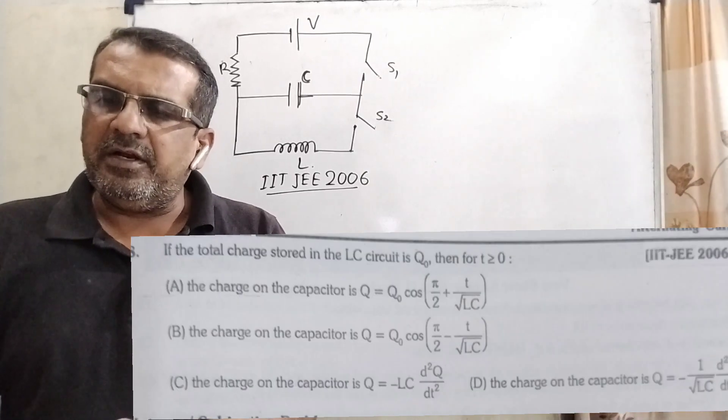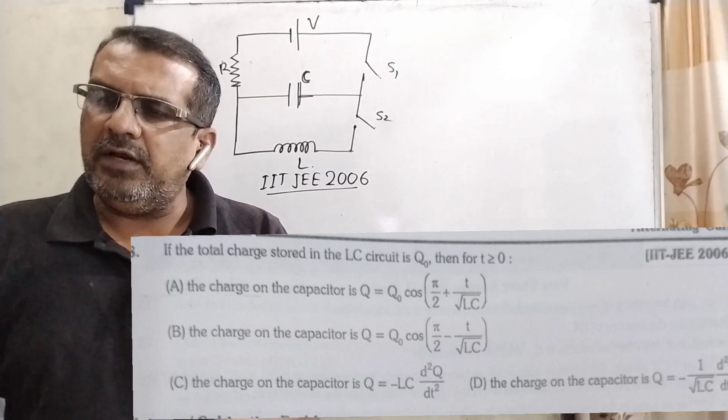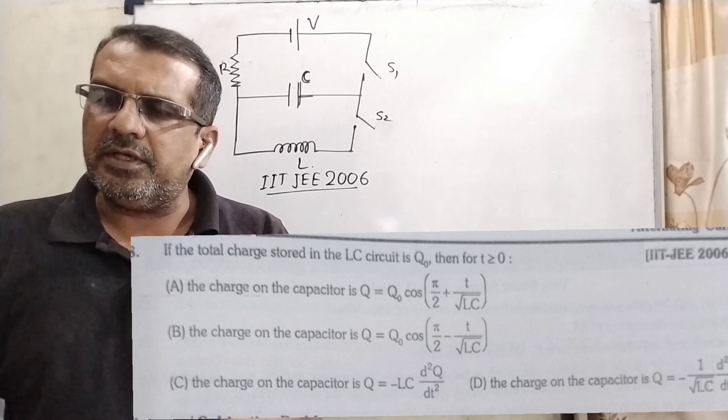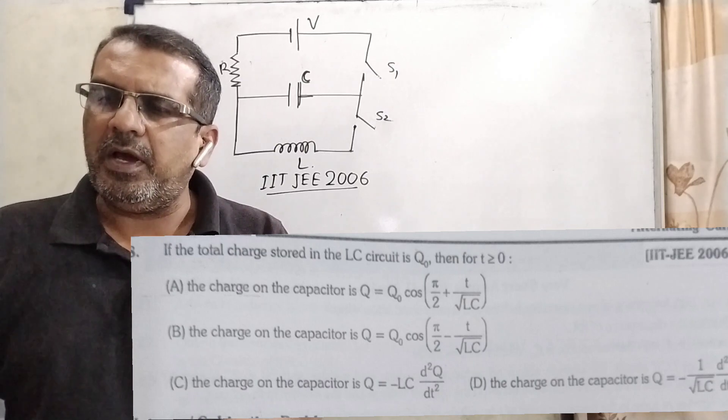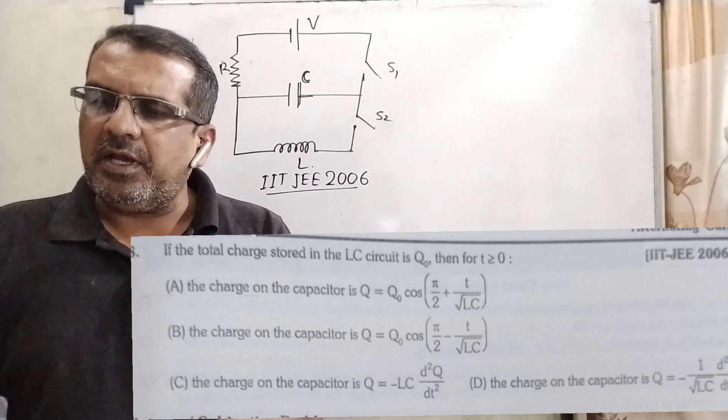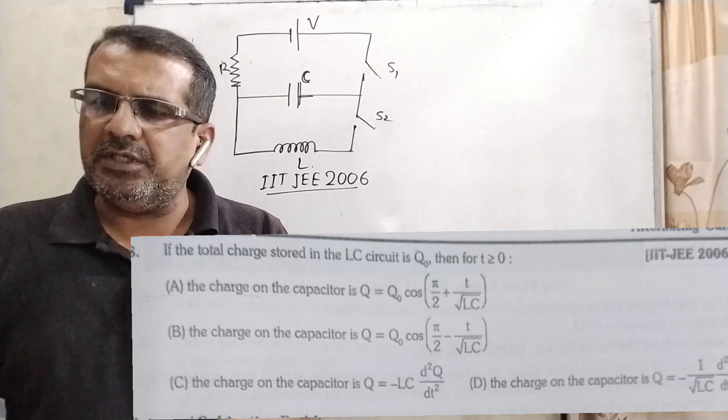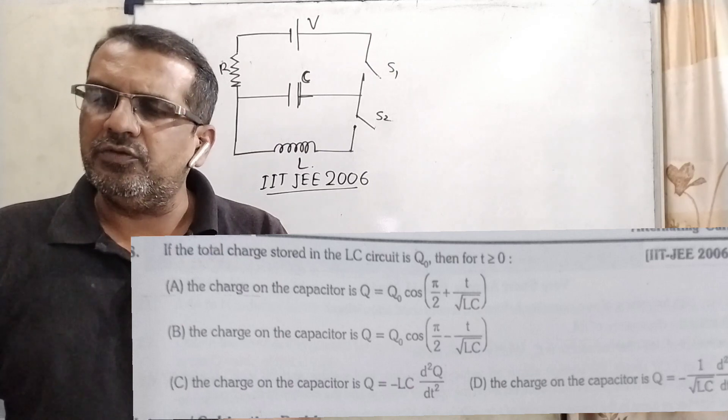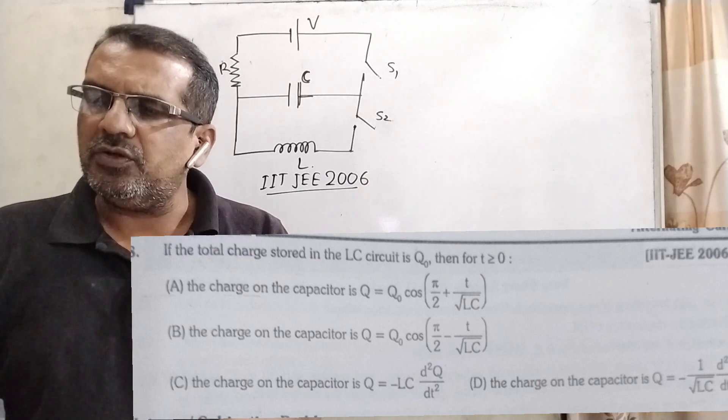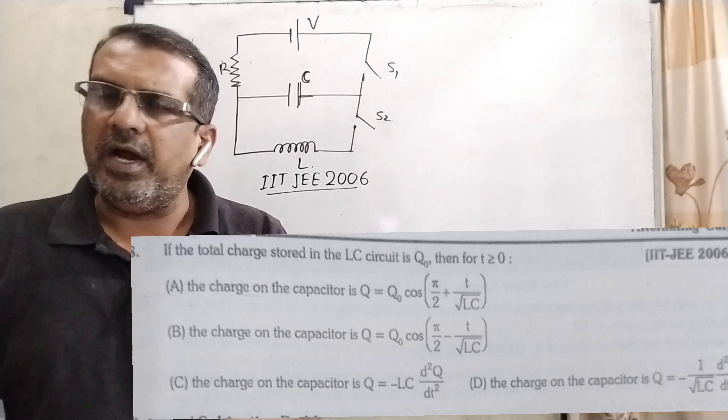Now, next question based on this paragraph. If the total charge stored in the LC circuit is q0, then for t is greater than or equal to 0, option A: the charge on the capacitor q equal to q0 cos(pi by 2 plus t by root LC). Option B: the charge on the capacitor is q equal to q0 cos(pi by 2 minus t by root LC). Option C: the charge on the capacitor is q equal to minus LC d square q by dt square, and option D: the charge on the capacitor q equal to minus 1 upon root LC d square q by dt square.